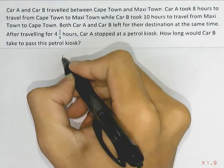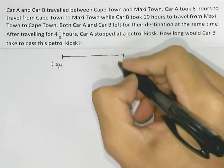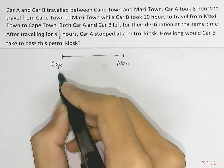Car A and B travel between Cape Town and Maxi Town. So this will be Cape Town, this will be Maxi Town.